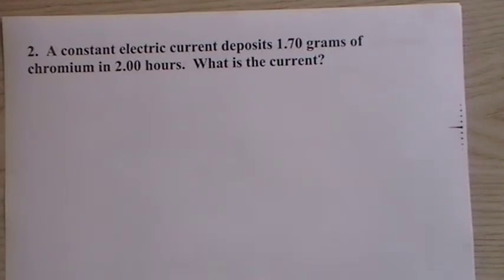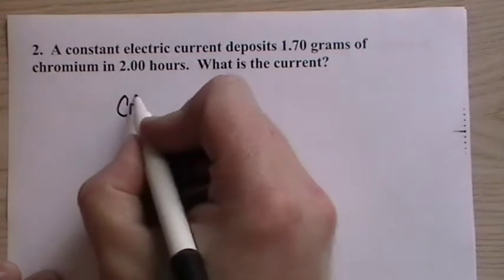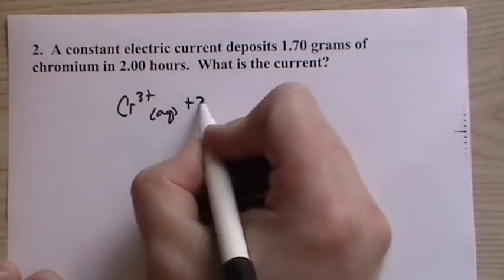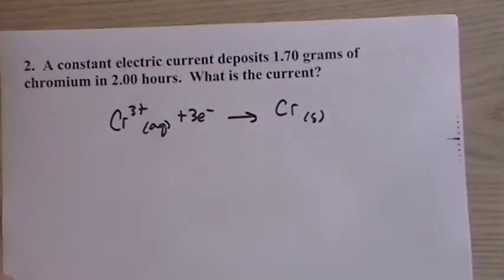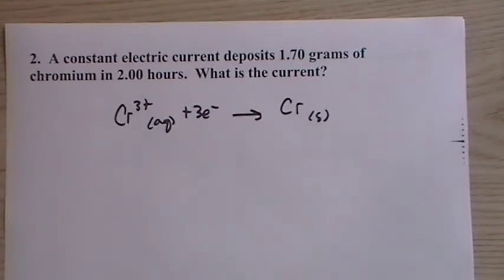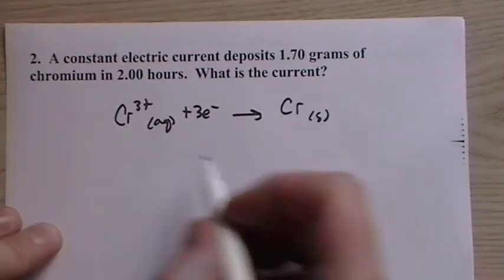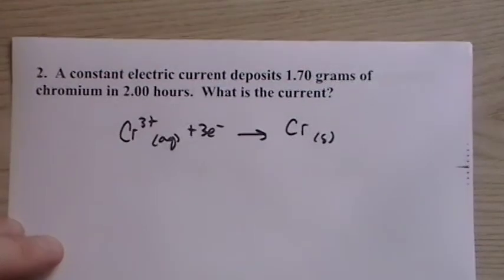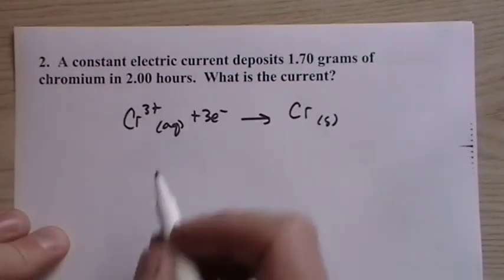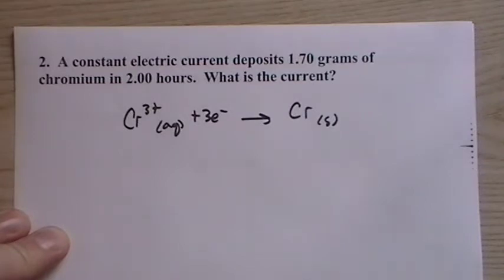And then we have these two electrolytic reactions that we have to deal with. A constant electric current deposits 1.7 grams of chromium. So chromium ion in aqueous form, that's where we're going to find that reaction. The chromium ion plus three electrons produce chromium metal. This is the reduction, it doesn't say what the oxidation is. We don't care. There's some oxidation, some other process that completes the full reaction. But this is what we're interested in.